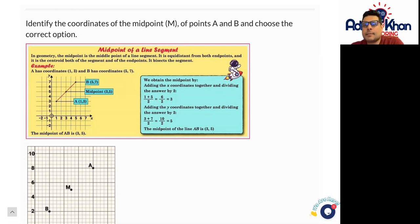In geometry, the midpoint is the middle point of a line segment. It's equidistant from both endpoints and is the centroid of both the segment and the endpoints. Equidistant means exactly the same distance away from two points.